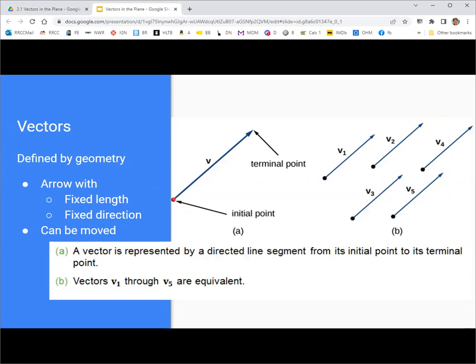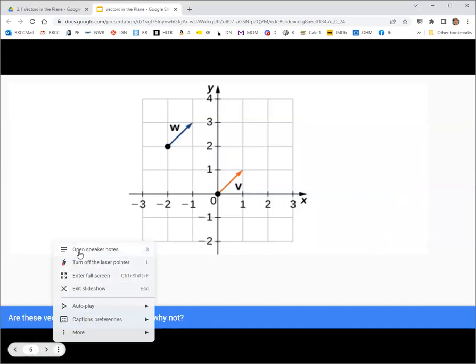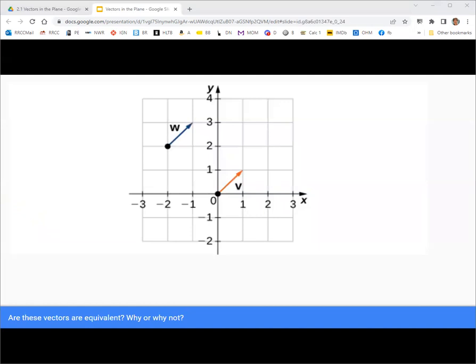The initial point is where the vector starts, and then it's drawn to the terminal point. The terminal point is the end with the arrowhead. So looking at these two vectors, are they equivalent? Yes, they are, since they are pointing in the same direction, and they are the same length.